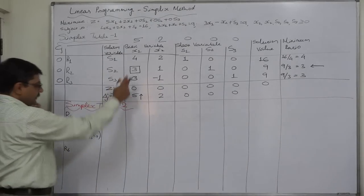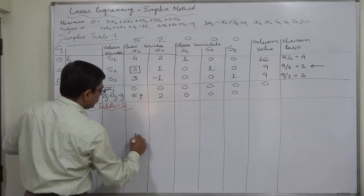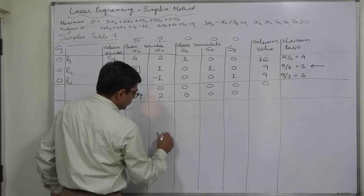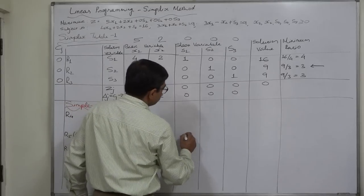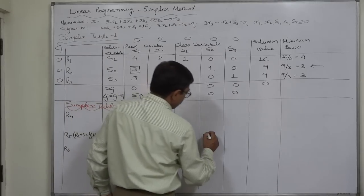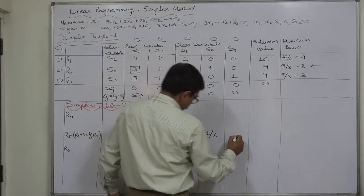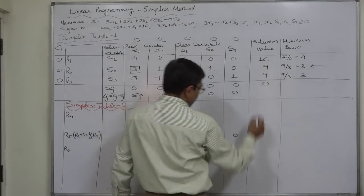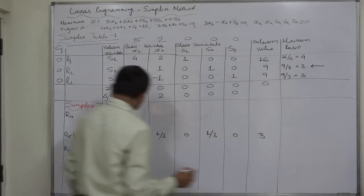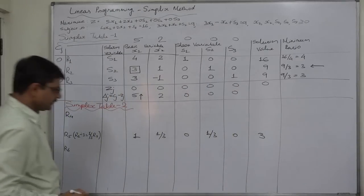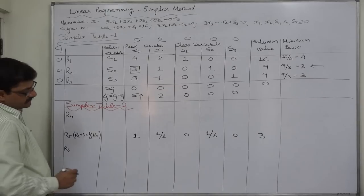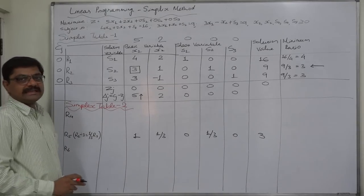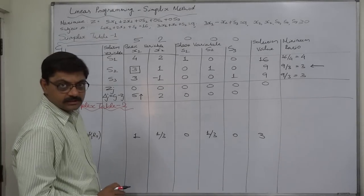R2 divided by 3: 3 divided by 3 is 1, 1 divided by 3 is one-third, 0 divided by 3 is zero, 1 divided by 3 is one-third, 0 divided by 3 is zero, and 9 divided by 3 is three. This is our replaced row that will now serve as the master key for us.